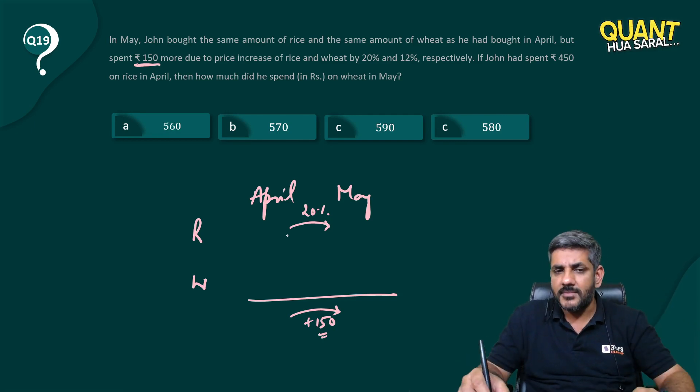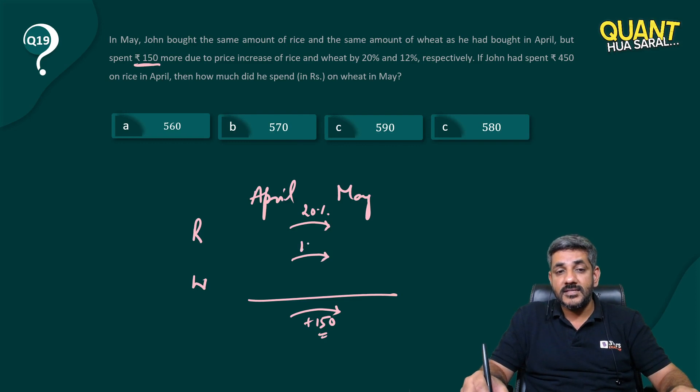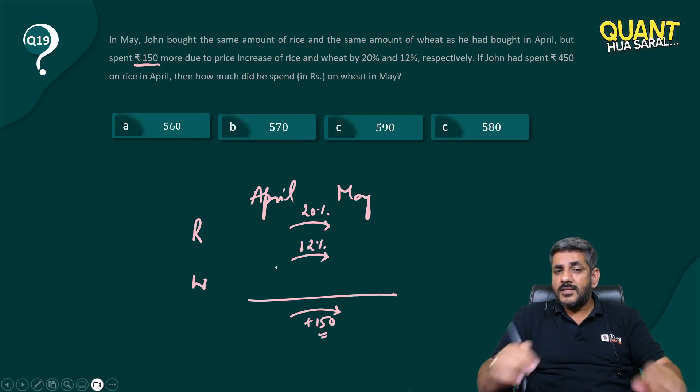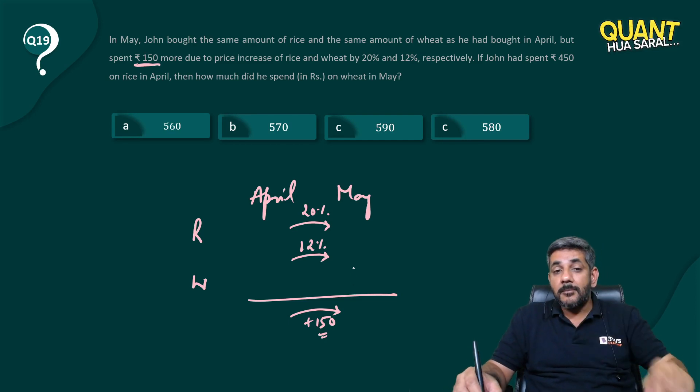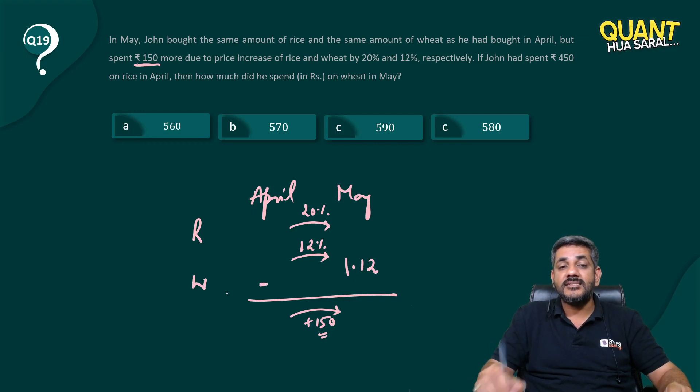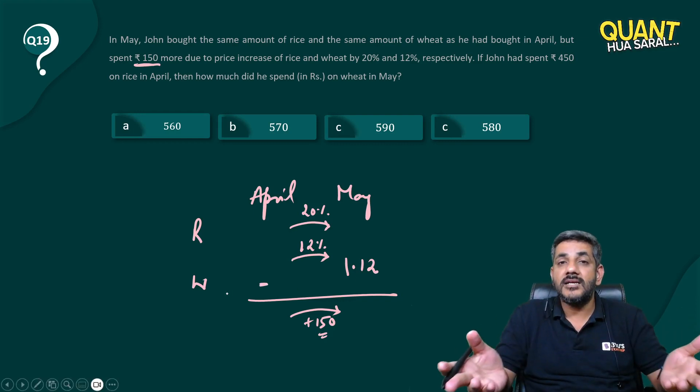The price of rice increased by 20 percent and price of wheat increased by 12 percent. The moment he said the price of wheat increased by 12 percent, that means price of wheat in May was 1.12 times of the price in April. Whenever something is increased by 12 percent, it becomes 1.12 times,